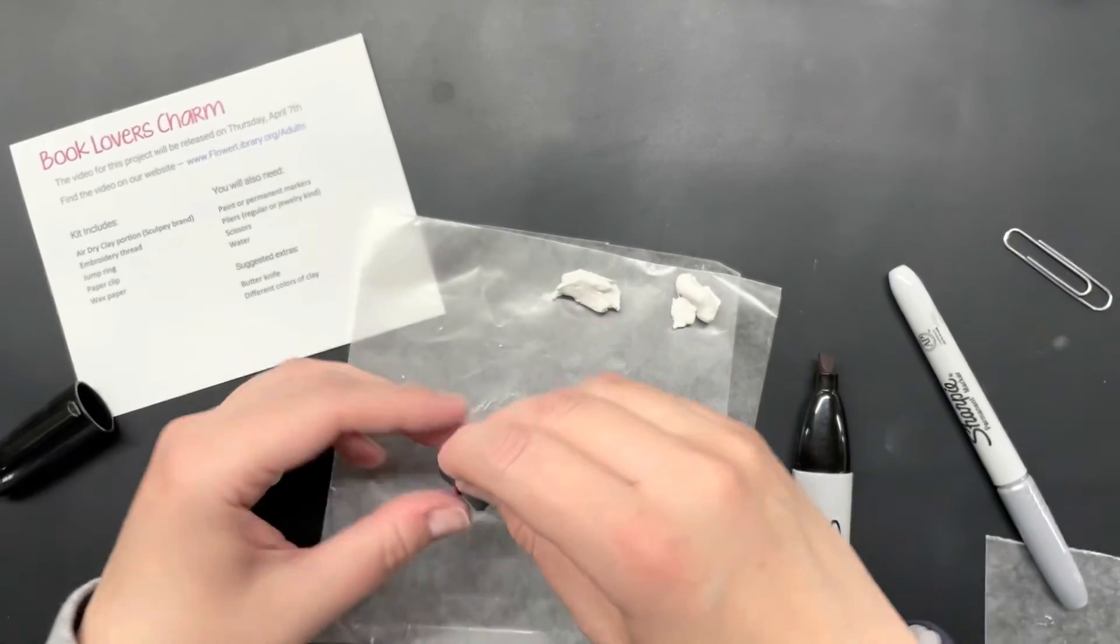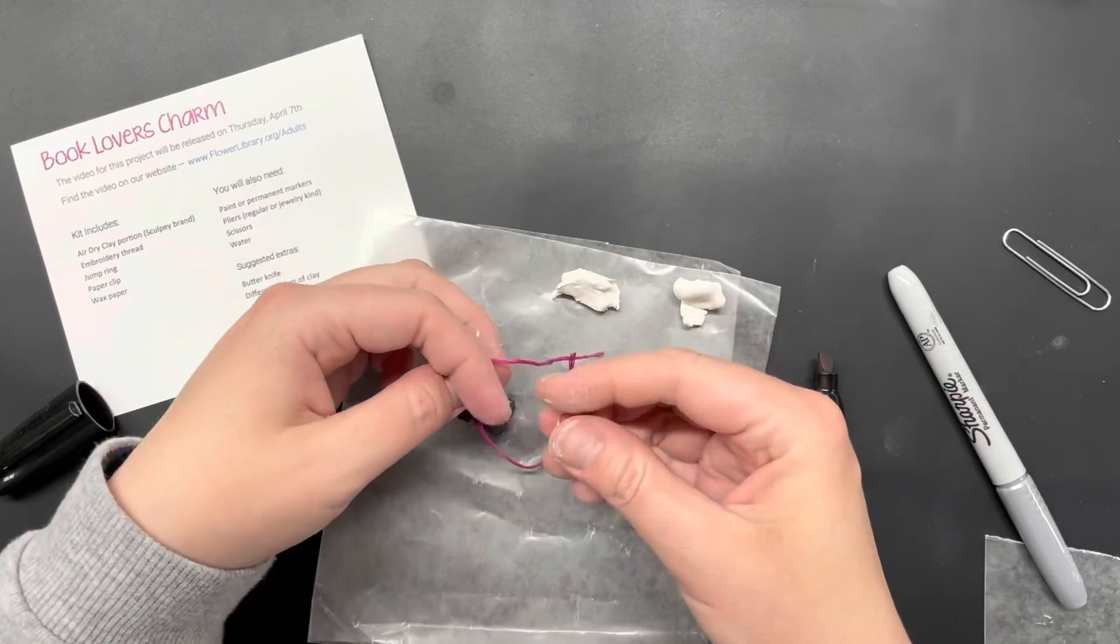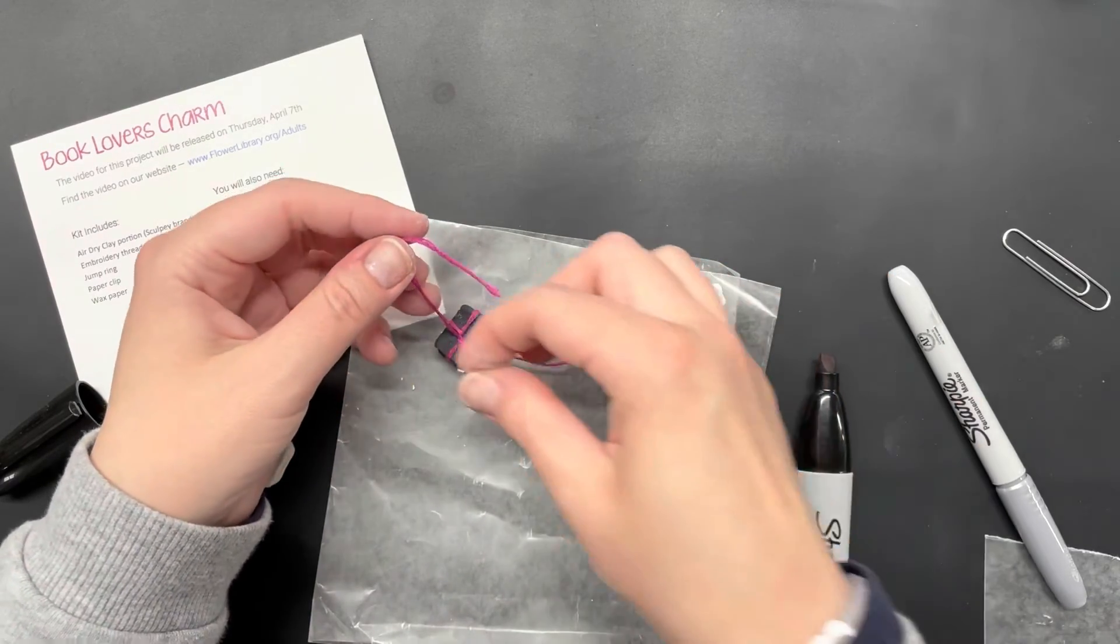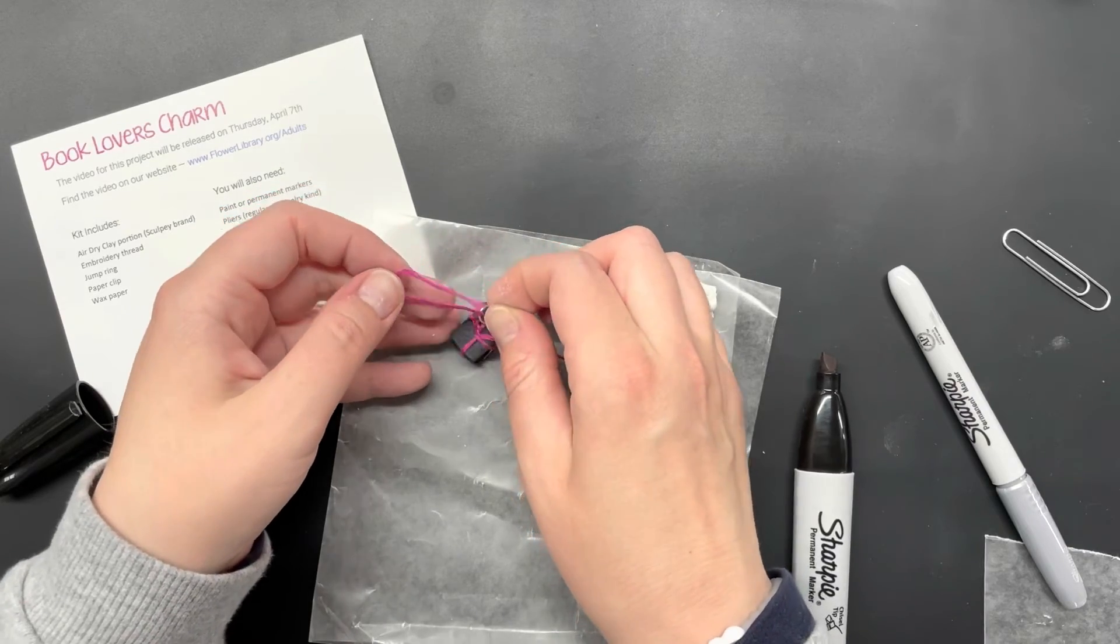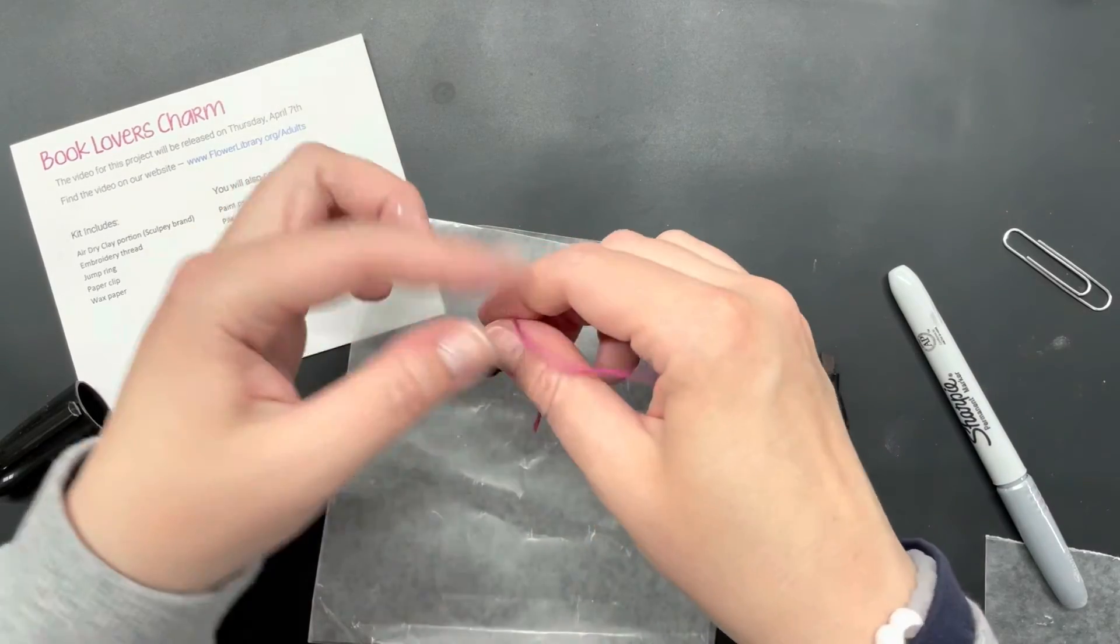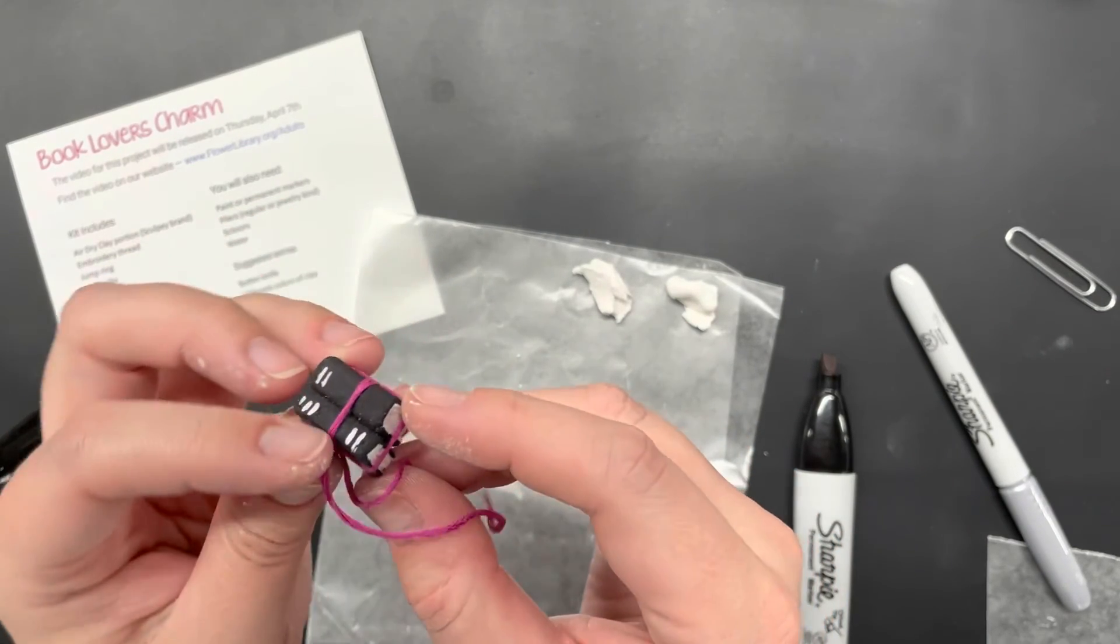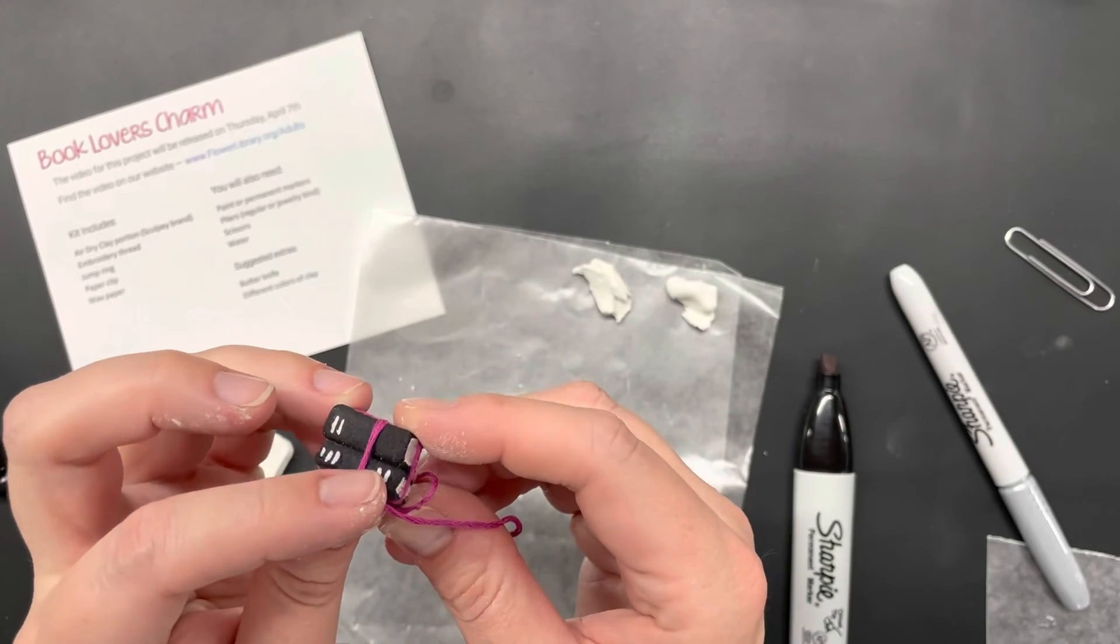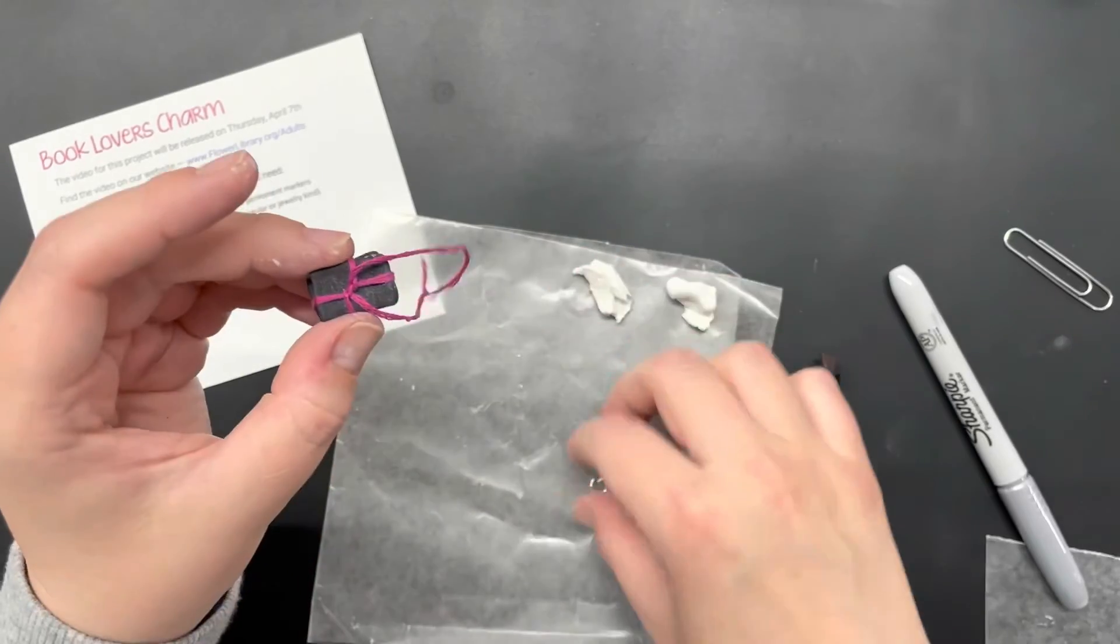You can then tie this into a knot around your jump ring. And then use your jump ring to hang this from a keychain, a necklace. Unlimited options. A tassel on a bookmark that hangs out the side. All kinds of possibilities.